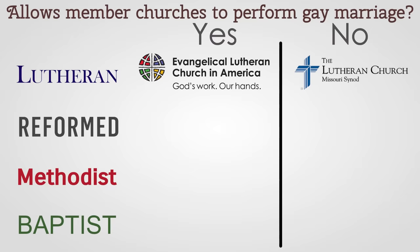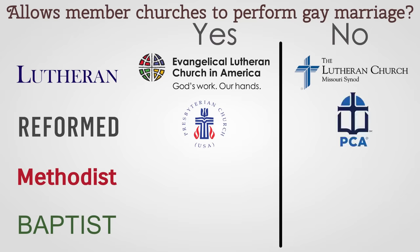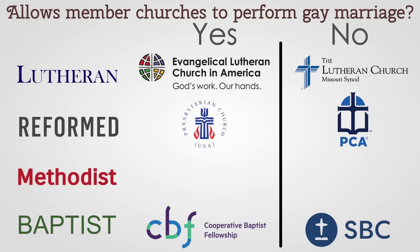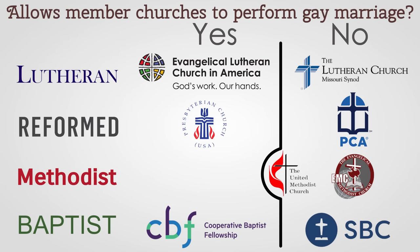For Reformed churches, the PCUSA Presbyterian denomination is more theologically liberal, with many accepting gay marriage and viewing the Bible as having errors, while the PCA says the Bible is inerrant and doesn't allow gay marriage or women as pastors. For Baptists, the Cooperative Baptist Fellowship is a liberal example, and the Southern Baptist Convention is a conservative one. Methodists are a bit different right now — the United Methodist Church is currently splitting over this kind of issue. The majority of U.S. leadership in the UMC favors allowing churches to conduct gay marriages if they choose, though the denomination is currently officially opposed to it. There are also more conservative groups like the Evangelical Methodist Church.